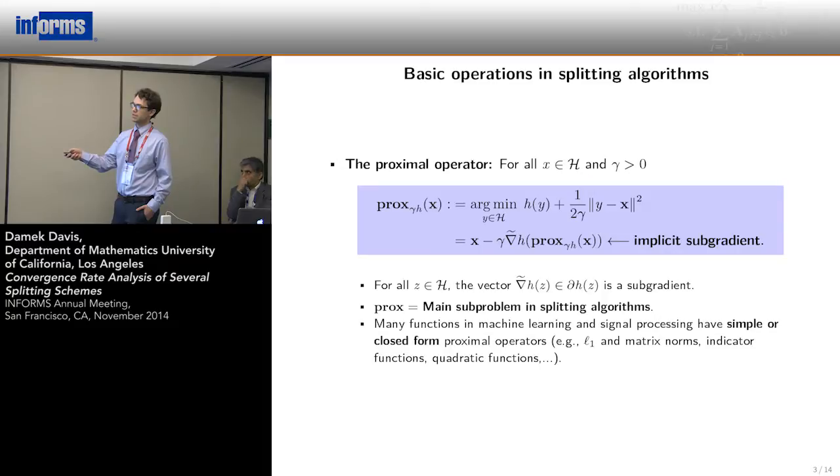What we're going to use today is this simple characterization of the minimizer of this sum as an implicit sub-gradient step. You'll notice that this is a sub-gradient taken at the target point, prox_γ(x), and we're going to use this throughout the talk.